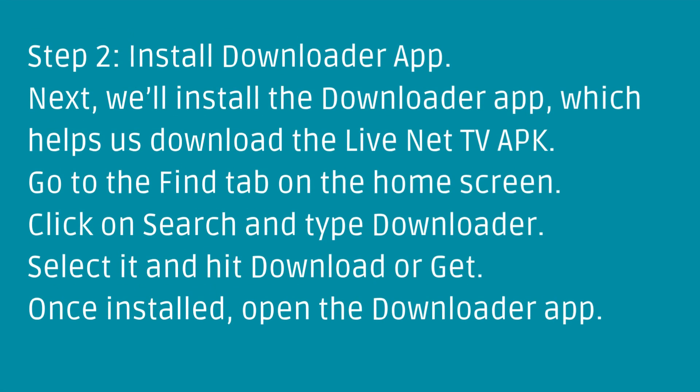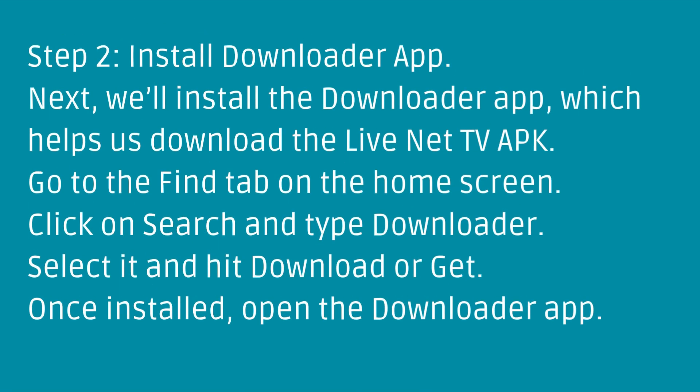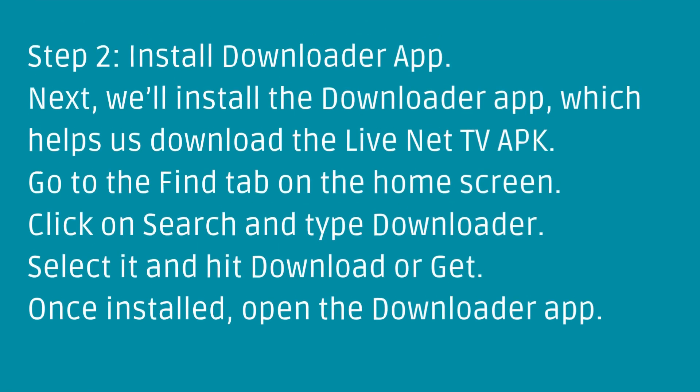Step 2: Install the Downloader App. Next, we'll install the Downloader App, which helps us download the LiveNet TV APK. Go to the Find tab on the home screen, click on Search and type Downloader, select it and hit Download or Get. Once installed, open the Downloader App.